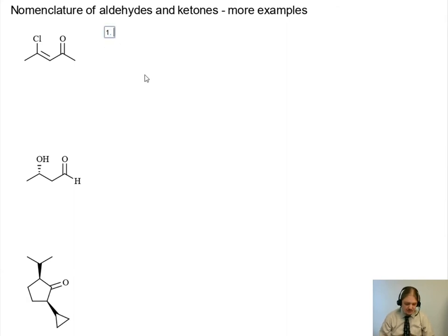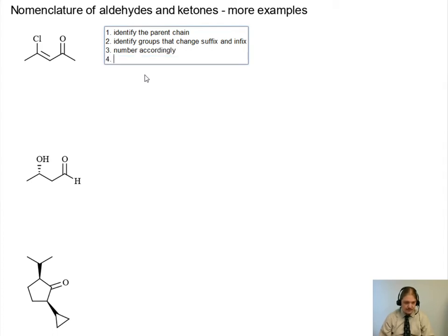So, as a reminder of our nomenclature process, we need to identify the parent chain. I'm adding, if you've watched some of my simpler videos, I've skipped some of these steps, but now I'm putting them all in here. So we need to identify groups that change the suffix and infix. Then we need to number accordingly. And now we need to identify substituents. And then 5 is any stereochemical descriptors.